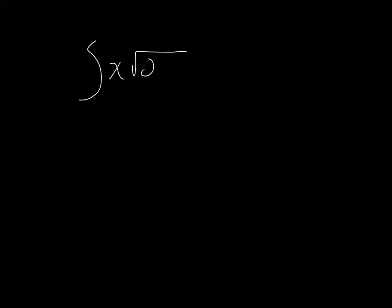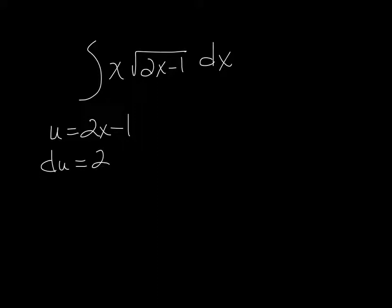So if we have a problem that looks like x times the square root of 2x minus 1, I can't distribute that x in there. If I were just thinking substitution, what would you want to let u equal? 2x minus 1, because that looks like it's the inner function. So if we take the derivative of u, that's just going to be 2dx. I have a dx but I don't have a 2, so we could do one-half du equals dx. But I still have a problem — I have an extra x in the problem, and that's not part of the derivative.